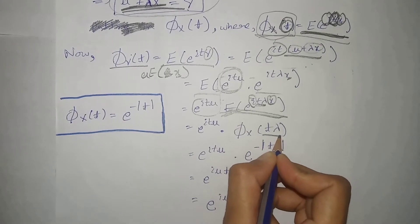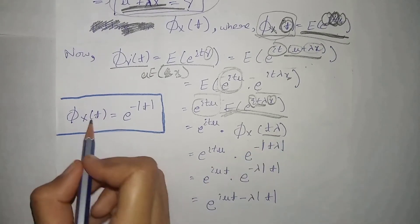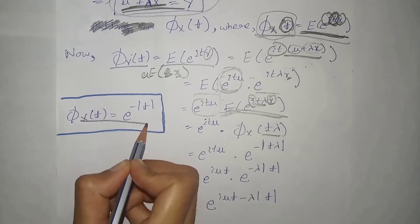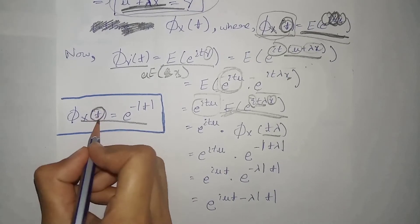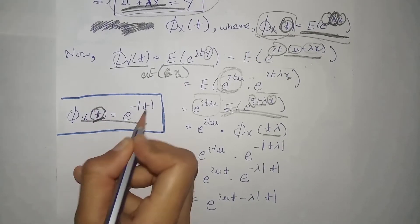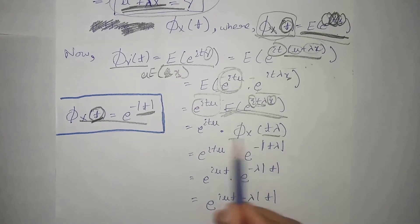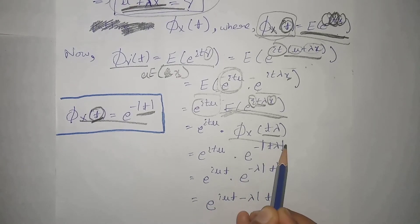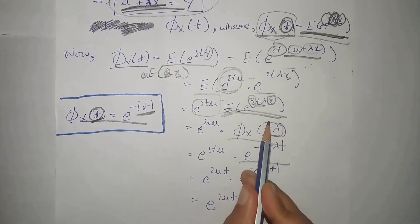We know that x's characteristic function, which we derived earlier, is equal to a specific expression. That is, the term present here, its modulus, gives us that value. So the characteristic function takes this equal value. Because this term is present, this term goes inside the modulus.